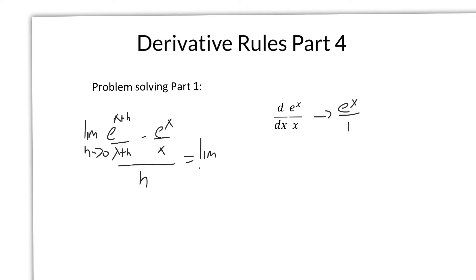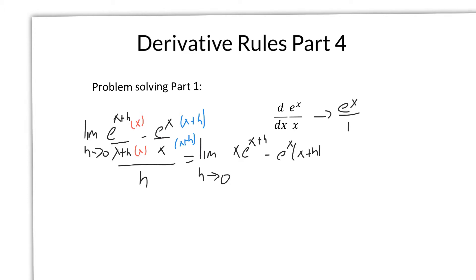Like I mentioned in the previous video, the way to work on this is to multiply by x here and by x plus h over here, to get a common denominator. So that'll be x times e to the x plus h, minus e to the x times x plus h, all over x plus h times x. And the h, because it's division, you can sneak that up into the denominator.